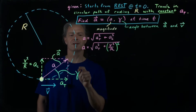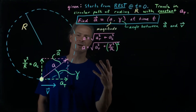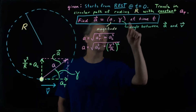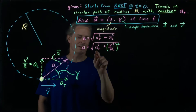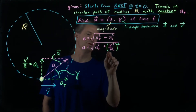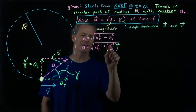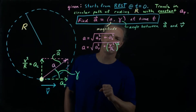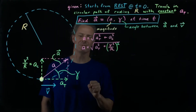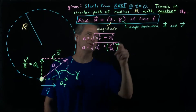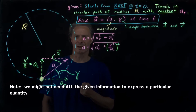Our goal is to get the magnitude of the acceleration in terms of our given information — some combination of R, a sub t, and t. A sub t conforms, R conforms, but this v here is the speed at time t. We need to get the speed v at time t in terms of some combination of R, a sub t, and t. So let's see if we can do that.